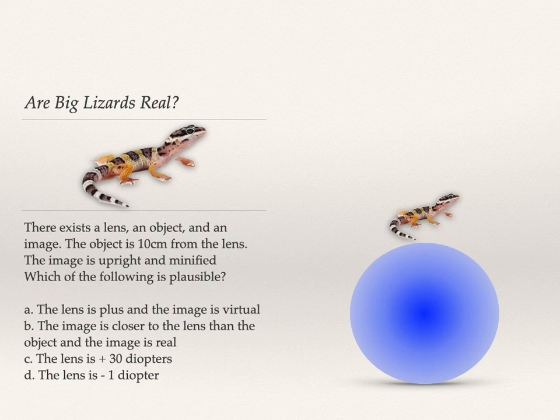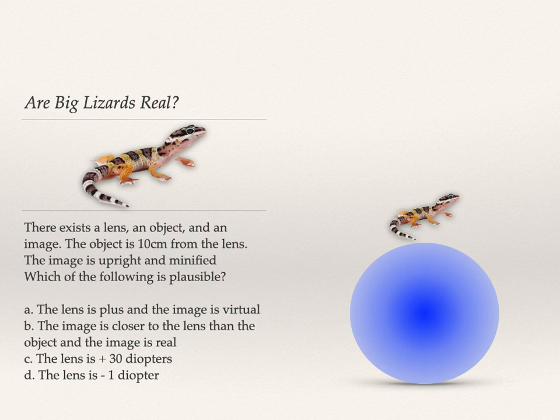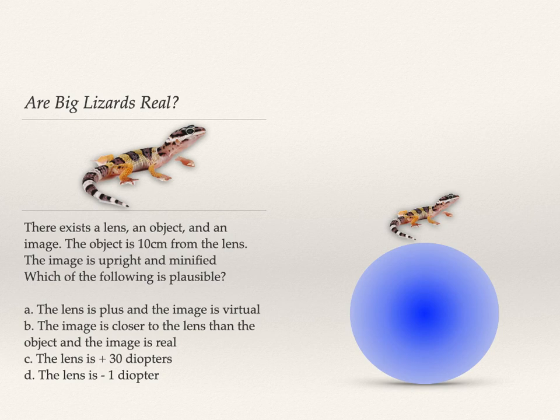Last problem: a lens, object, and image. The object is 10 centimeters from the lens; the image is upright and minified. The answer must involve a minus lens, because upright means on the same side as the object and minified means closer to the lens. Minus lenses always make things virtual, upright, and minified.